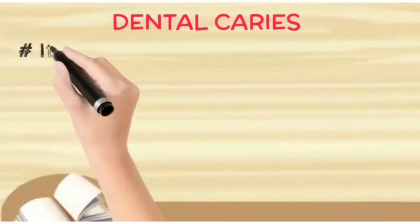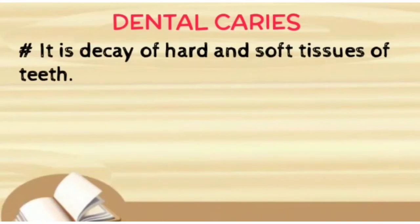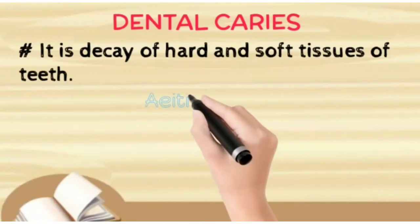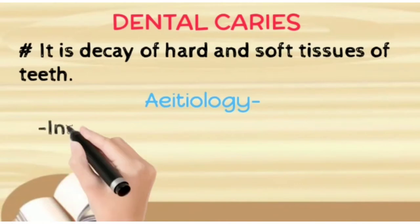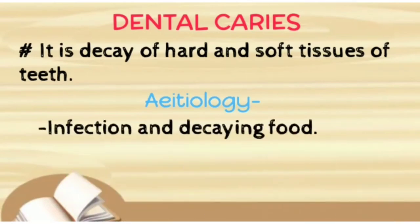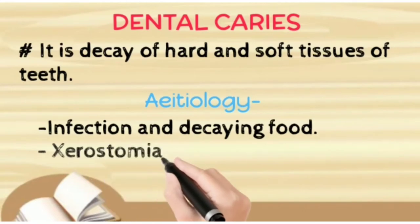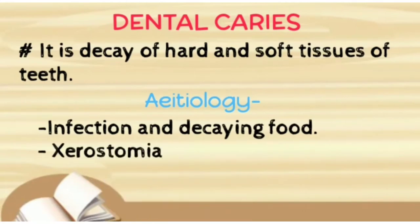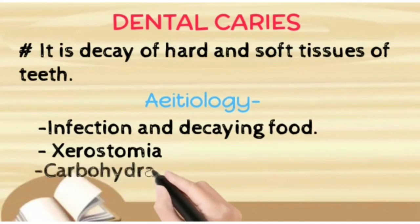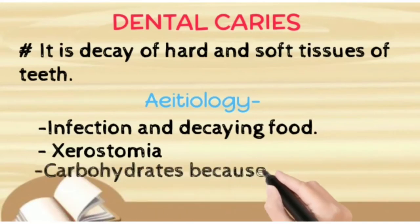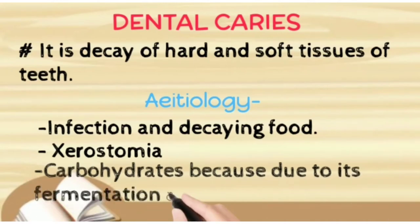In this video we are going to talk about dental caries, which is the decay of hard and soft tissues of teeth. Now we are going to talk about its etiology — that means what causes it. Infection and decaying food, then xerostomia (that means dryness of mouth), and also carbohydrates are responsible for dental caries because due to fermentation, acids are produced in the mouth and that acid causes dental caries.